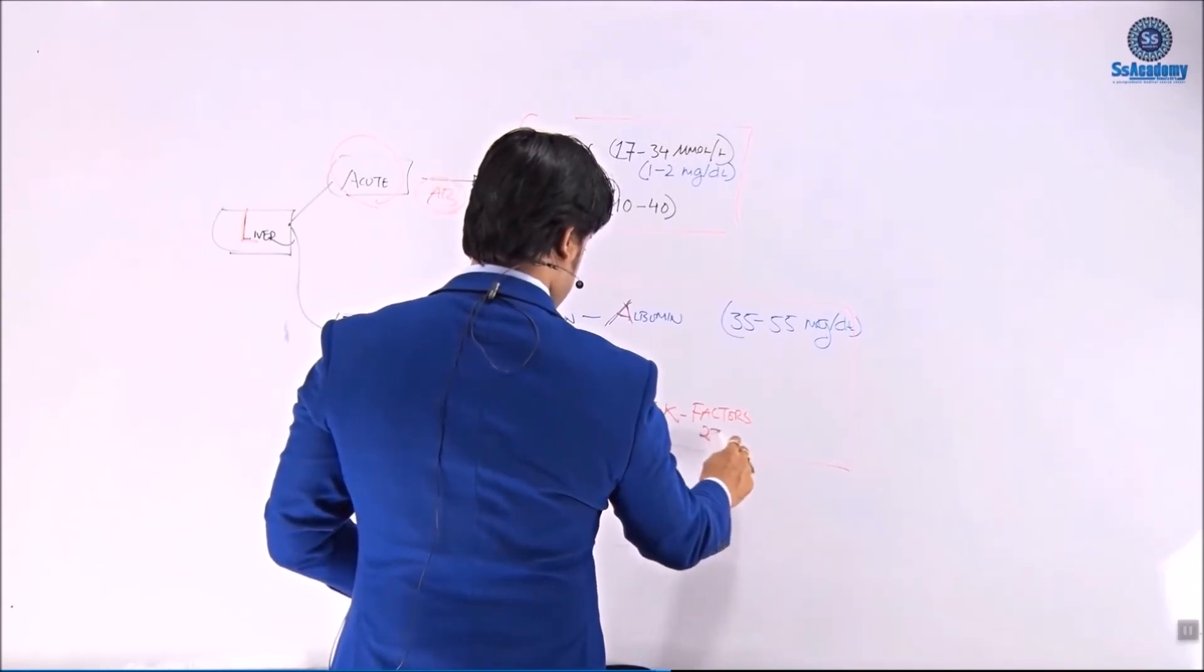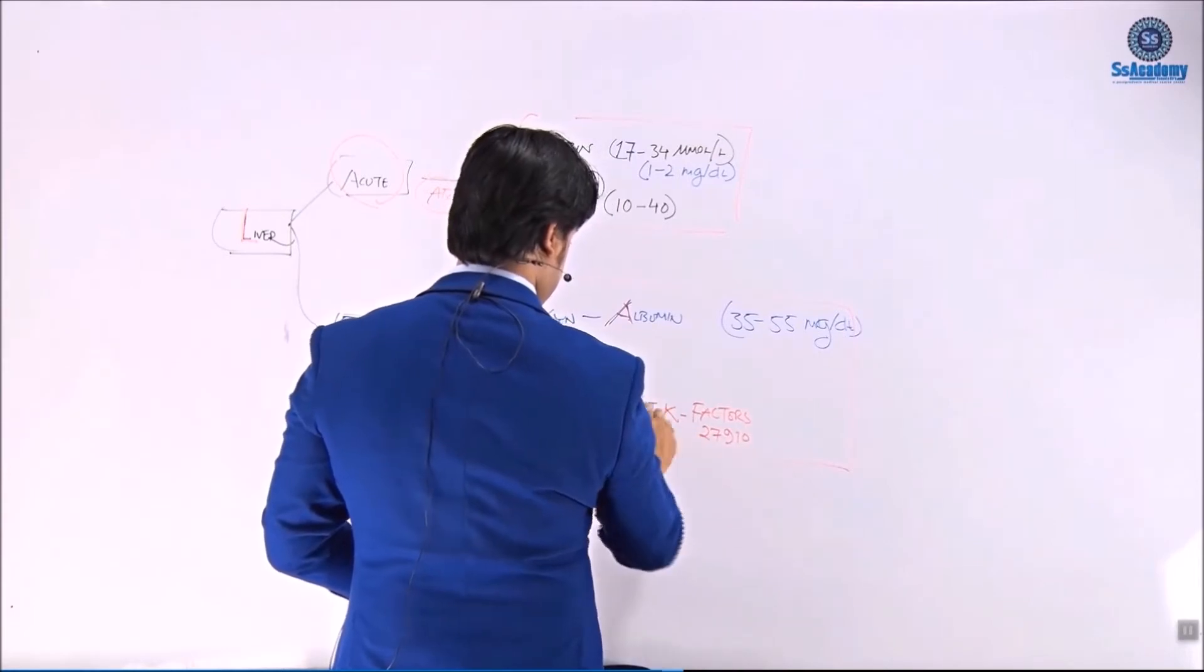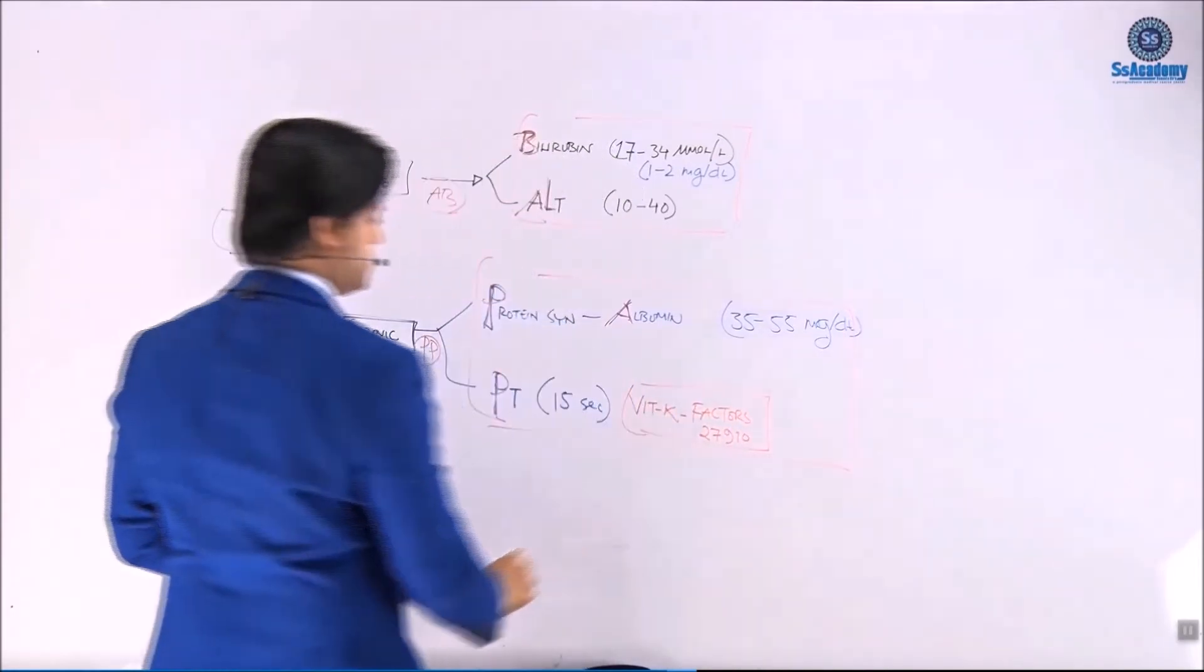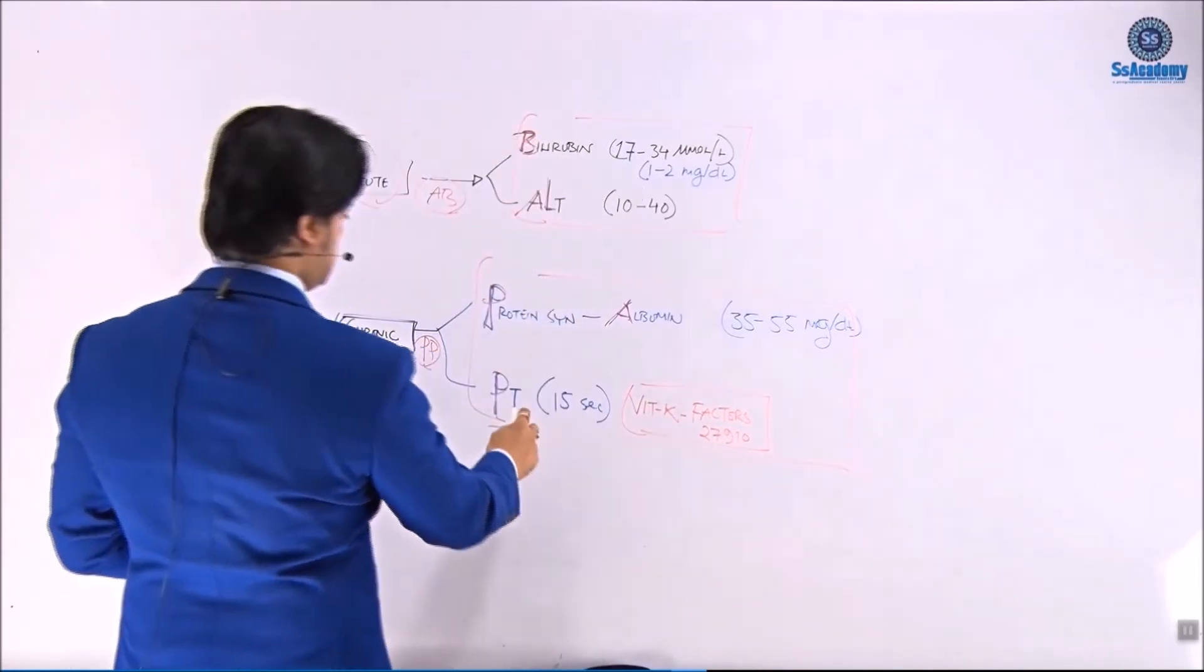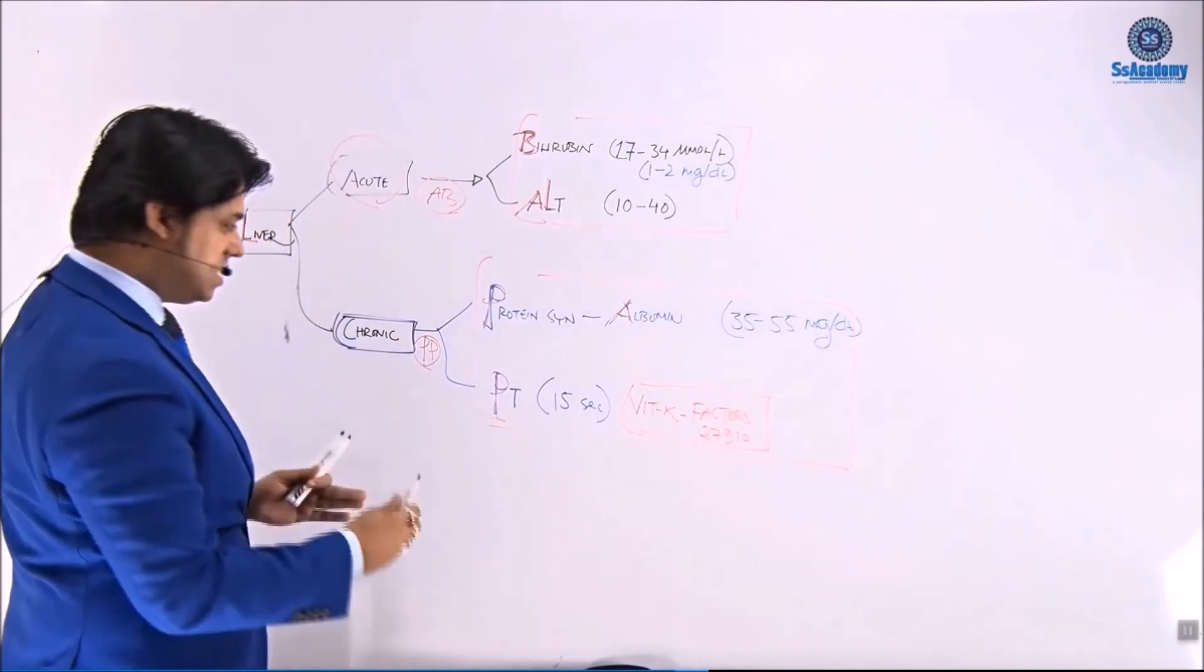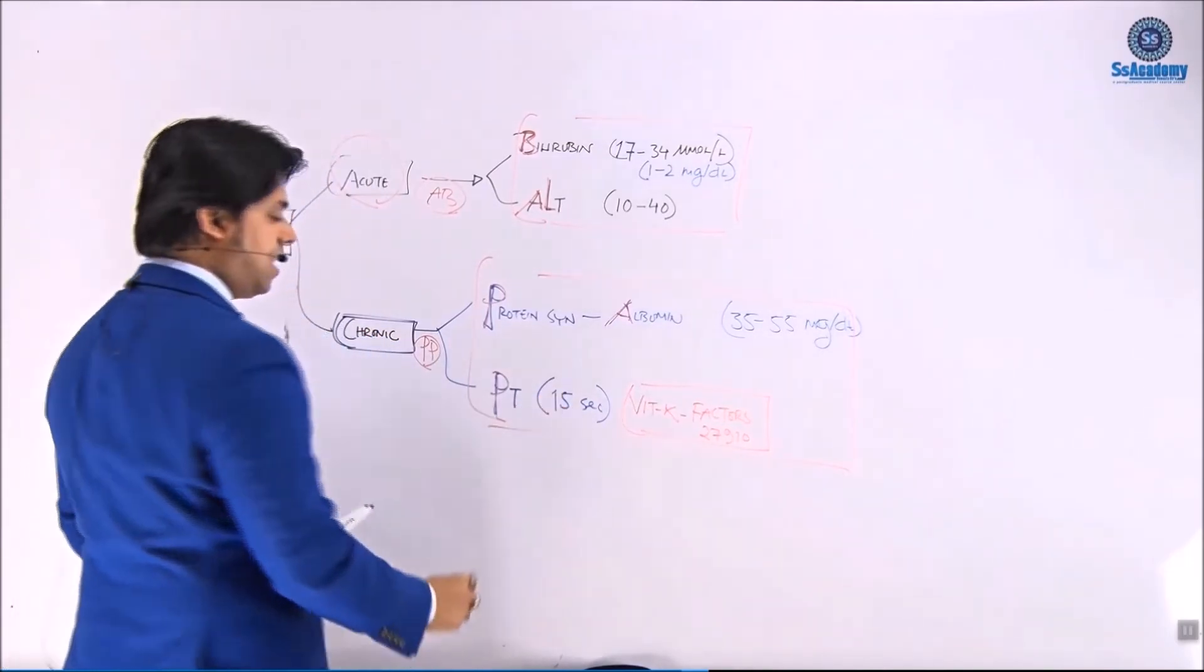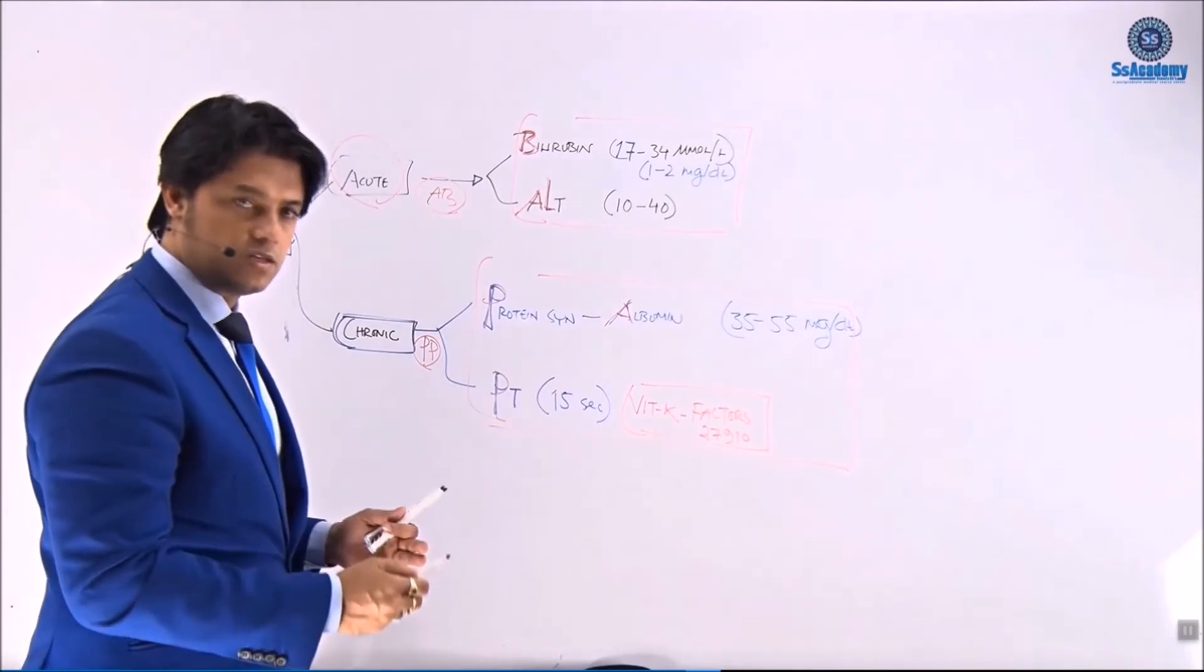2, 7, 9, 10. So these are the things actually maintained within a normal range. P for the prothrombin time, PT for 15. Alright, no problem.